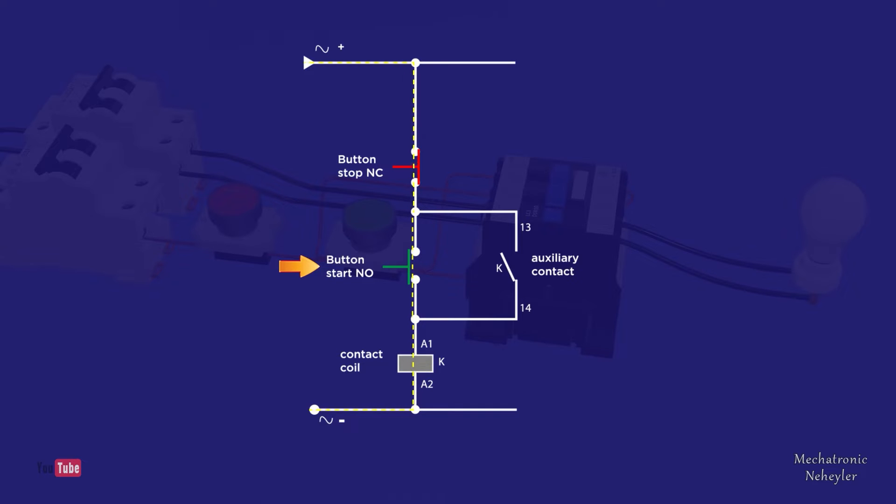When the coil is energized, it automatically closes its respective auxiliary contact, which will also create another path through which the current can circulate. So when you stop pressing the start button, the current stops passing through that side, and now only passes through the auxiliary contact which had previously been closed.